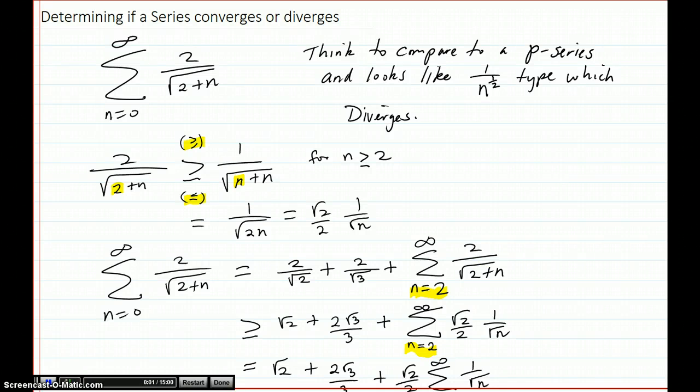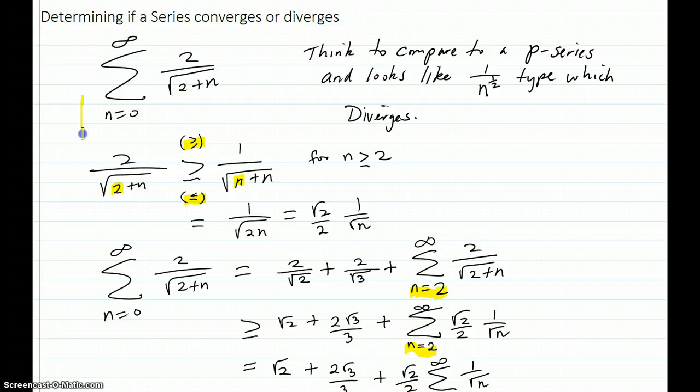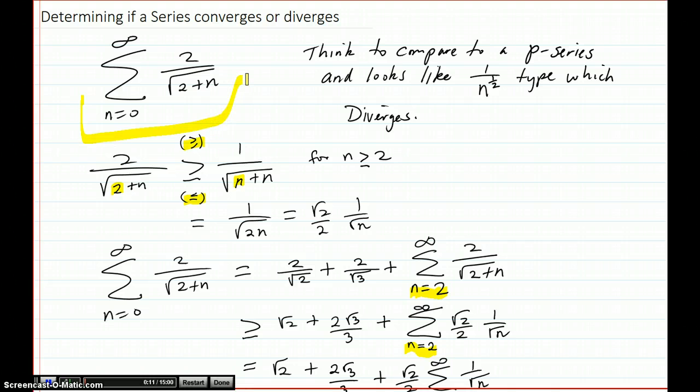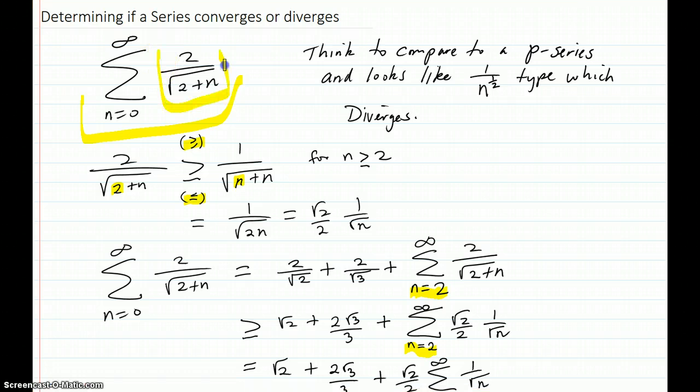Now we're going to learn about how to determine if a series converges or diverges. So our example is here. We're doing a series from n equals zero to infinity of these terms here.